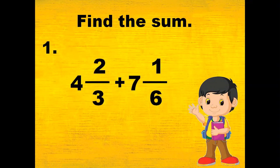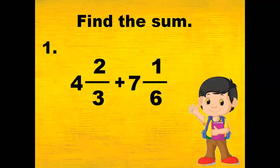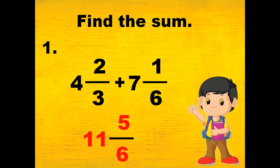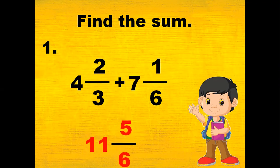Find the sum of 4 and 2 thirds plus 7 and 1 sixth. The answer is 11 and 5 sixths.